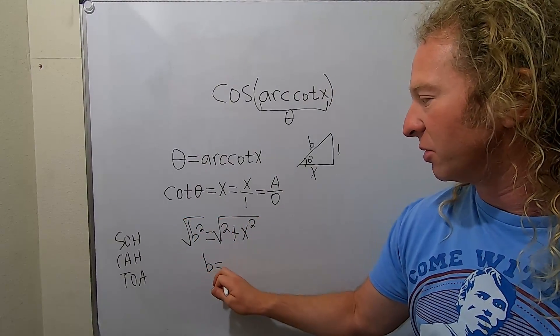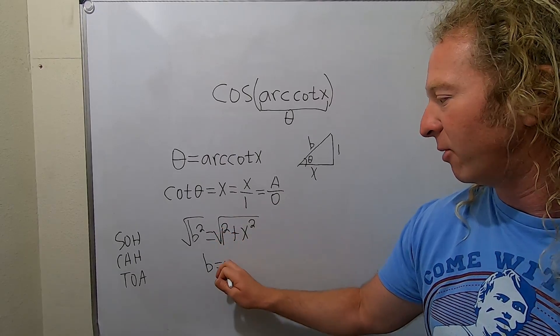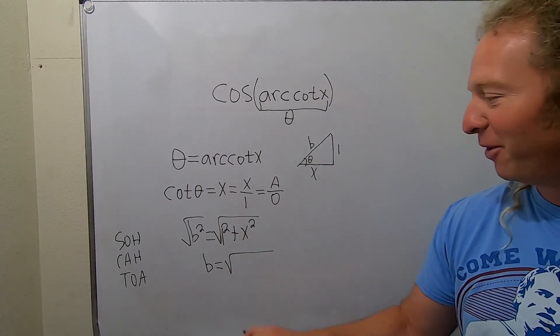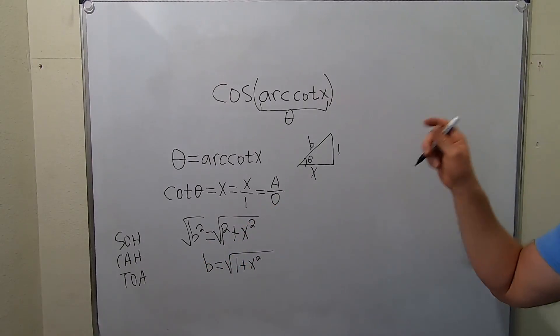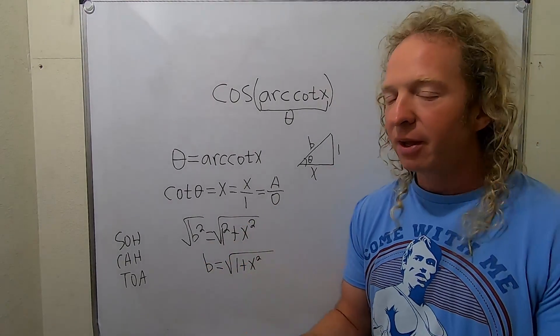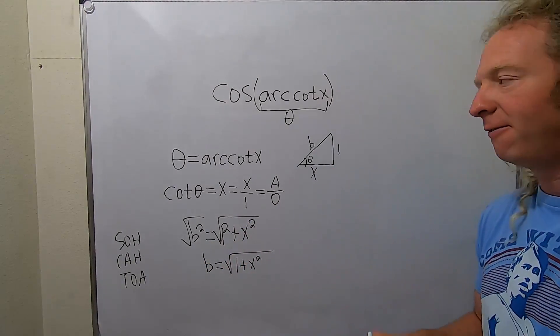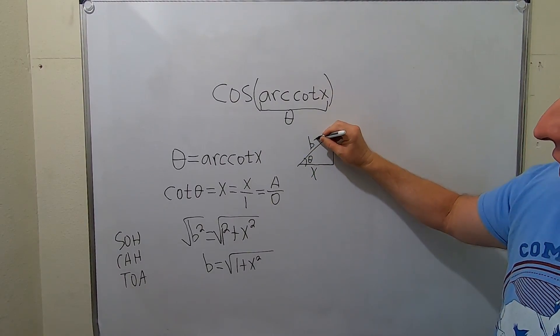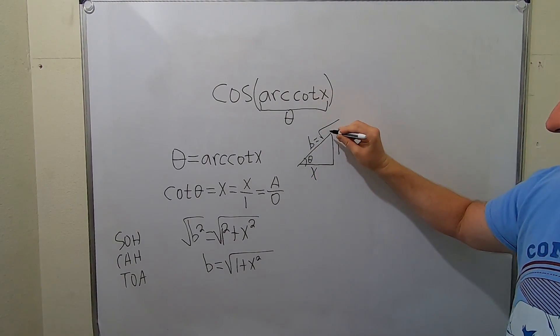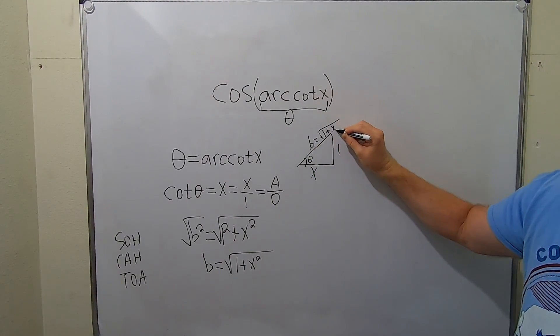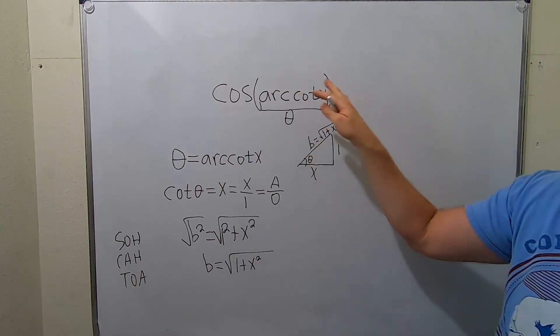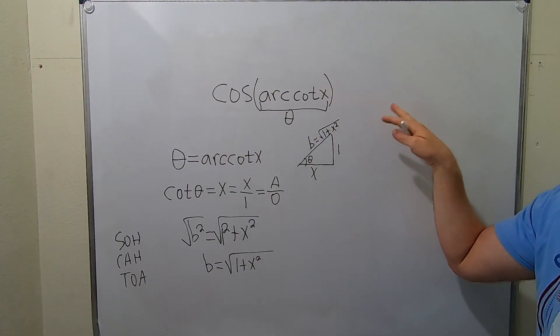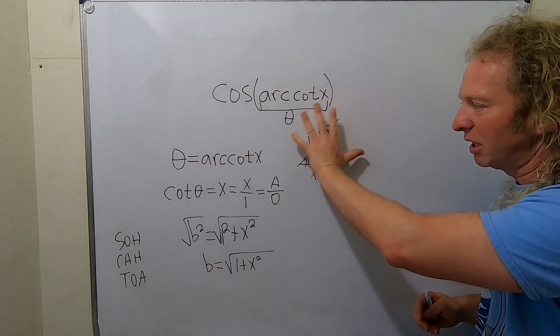So you get little b equals square root of one plus x squared. Now some people like to go straight to the answer because you can see little b here. Personally I like to go back and fill in the triangle because I feel that it really helps me. Especially later when you see this again this is just going to be at the end of a problem and you might have more. So it's really a good idea to completely fill in your triangle.